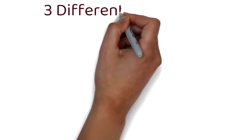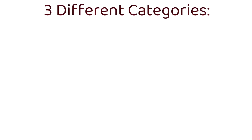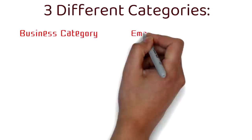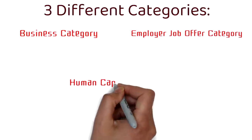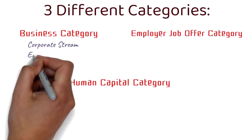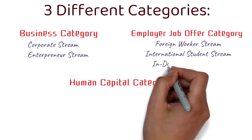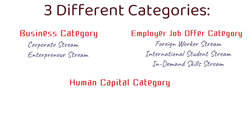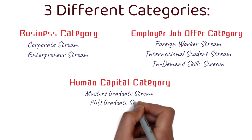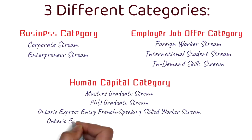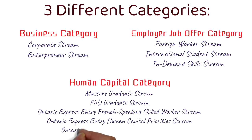Let's first find out which categories this new process is applicable for. Overall for OINP there are three different categories: a business category, employer job offer category, and human capital category. Under business category we have corporate and entrepreneur stream. Under employer job offer category we have foreign worker, international student, and in-demand skill stream. Under human capital category we have master's graduate, PhD graduate, Ontario Express Entry French-speaking skilled worker, Ontario Express Entry human capital priority stream, and Ontario Express Entry skilled trades streams.